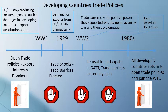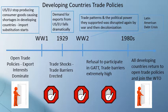Looking at developing countries' trade policies: before World War I, most developing countries had very open trade policies and export interests dominated. But during World War I, the US and Europe stopped producing consumer goods — making tanks, guns, and planes instead — which caused shortages in developing countries. This triggered what's called import substitution on quite a large scale, as there was suddenly huge demand for fridges, lathes, and consumer goods that had previously been imported from Europe and the US.